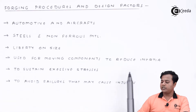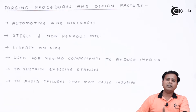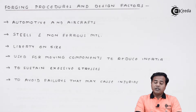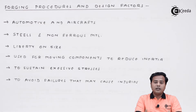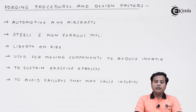The next thing is the use of forging for moving components to reduce inertia. If moving components are heavy enough, inertia will affect the efficiency of the given product. There are two important things about moving parts: they should be light enough and strong enough, because moving parts generally fail in a fatigue manner or may suddenly cause huge damage. That is why forging procedures are important for reducing weight while giving strength to such components.